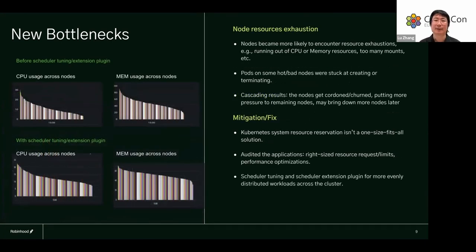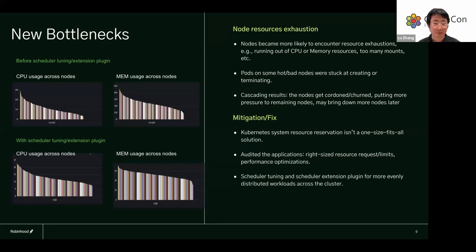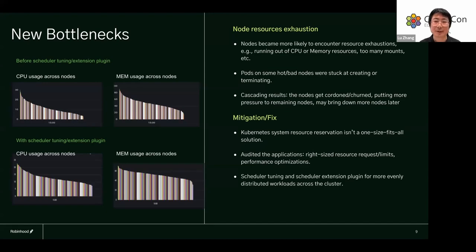Another bottleneck was data plane node resource exhaustion. Nodes on the new Cilium cluster became more likely to encounter resource exhaustion — running out of CPU, memory, or having too many mounts. Pods on such nodes got stuck at creating or terminating. To make things worse, those nodes would be churned, and pods on those nodes had to be rescheduled to existing nodes since new nodes go through an initialization warm-up phase before joining the cluster. Migrating pods from churned nodes to existing nodes just put more pressure on already overloaded nodes, causing a cascading effect.